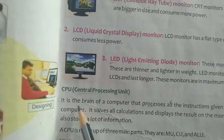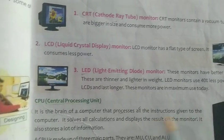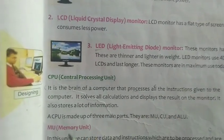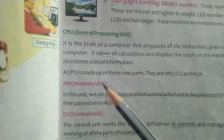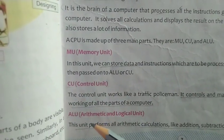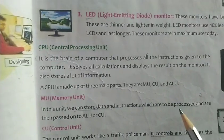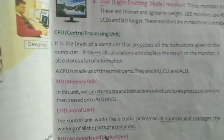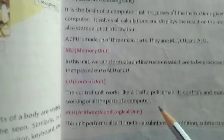Next comes the CPU. CPU is known as the brain of a computer — it processes the instructions given to the computer. It solves all the calculations and displays the results on the monitor, and it also stores a lot of information. The CPU is divided into three parts: MU (memory unit), CU (control unit), and ALU (arithmetic logic unit). The memory unit stores data and instructions for future processing. The control unit controls and manages the working of all parts of the computer.